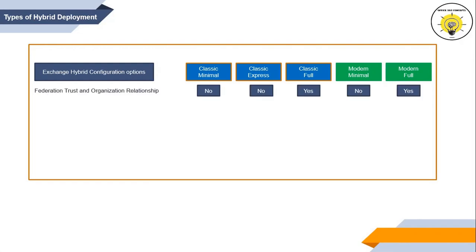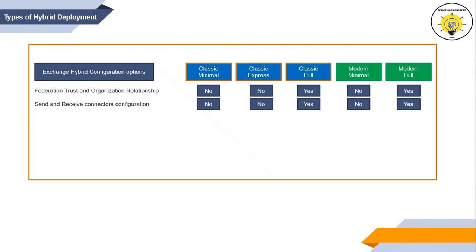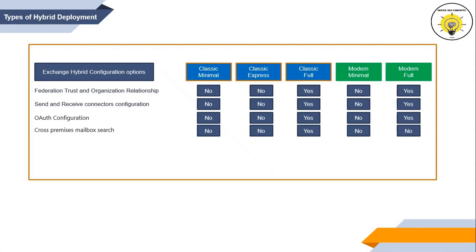Federation trust and organization relationship is configured only when classic full or modern full topology is selected. Send and receive connectors in on-premise are configured only in classic full or modern full topology. OAuth is configured only in classic full or modern full hybrid deployment. For on-premise Exchange Server 2013, 2016, or 2019 with the latest CU updates, cross-premises mailbox search is supported only in classic full hybrid deployment. Cross-premises mail tips are enabled only in classic full and modern full hybrid deployment.